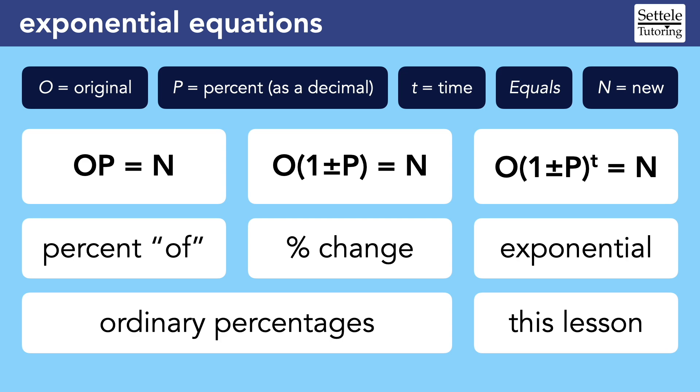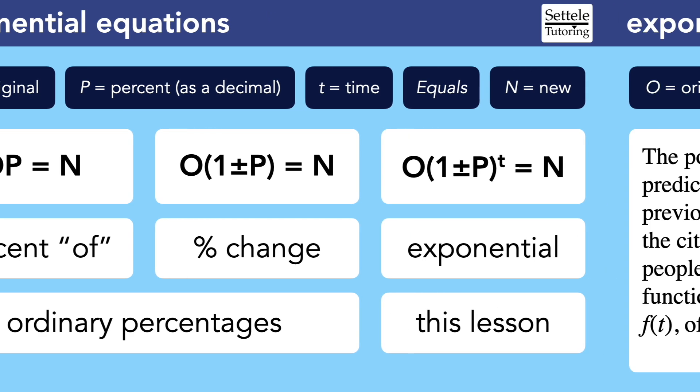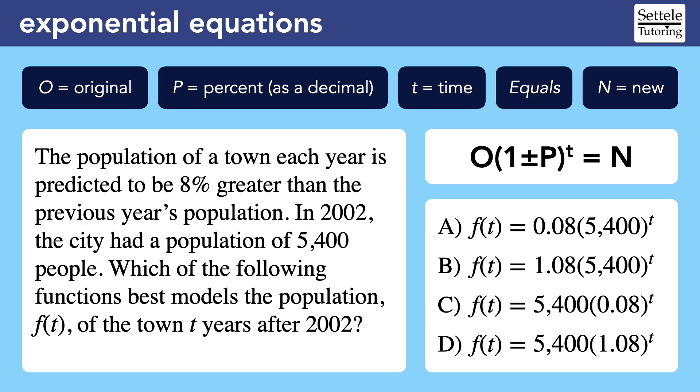Let's look at one of the exponential stories that you're likely to see on an SAT. The population of a town each year is predicted to be 8% greater than the previous year's population. In 2002, the city had a population of 5,400 people. Which of the following functions best models the population, f(t), of the town t years after 2002?